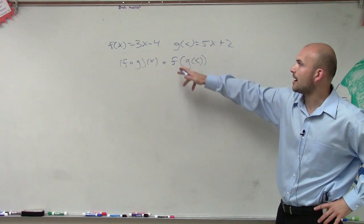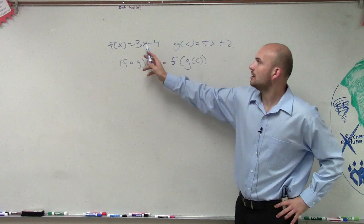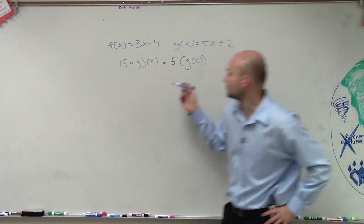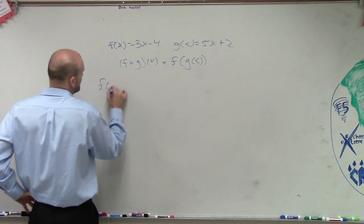So we look at this and we say, all right, f of x equals 3x minus 4, and g of x equals 5x plus 2. So if we go back to this, what we remembered